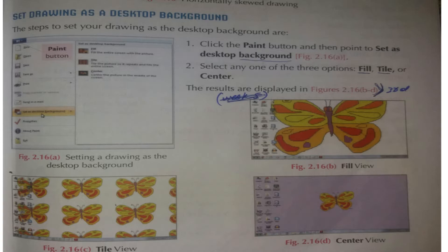Start the steps to set your drawing as a desktop background. Step one: click the Paint button, then point to 'Set as background.' You can also right-click the drawing, and a list will open giving you the picture option 'Set as background.' This is shown in figure 2.16a.